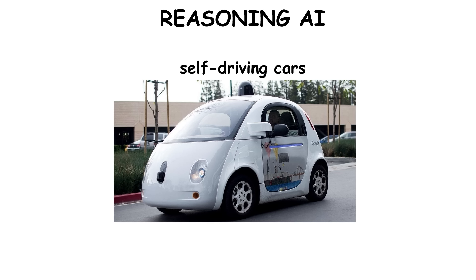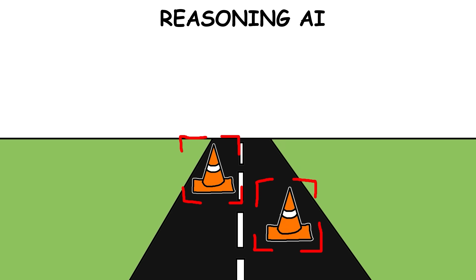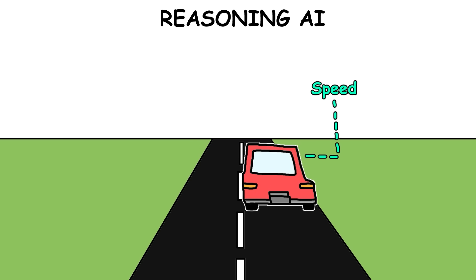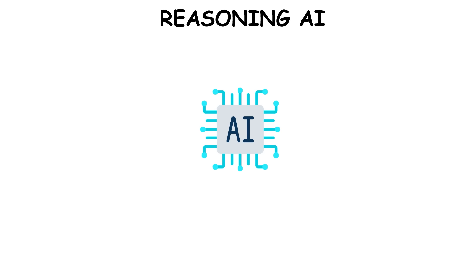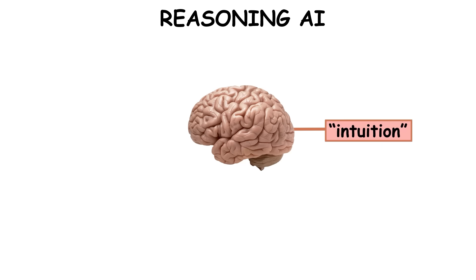A good example is self-driving cars. They don't just see obstacles, they also analyze things like the speed and direction of nearby cars to make safe choices in real time. These AIs are trained on millions of driving scenarios to develop a kind of intuition for driving, a bit like how humans make decisions on the road.